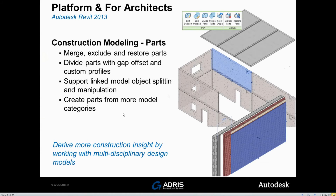The other thing I want to look at today is construction modeling for parts. You've had this in previous releases of Revit. They've added some nice functionality in 2013. One of the things they've added: I can now merge, exclude, and restore parts, so you get the ability to toggle on and off and join parts together. I can divide parts with a gap and a custom profile, which I'll show you. Support for linked models, object splitting and manipulation, and the ability to create parts from more than one model category — so you've got a lot more flexibility.